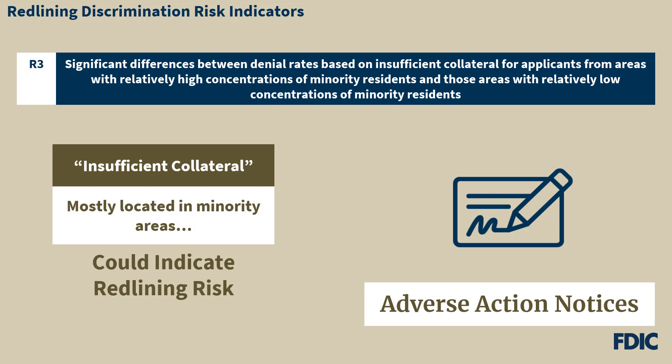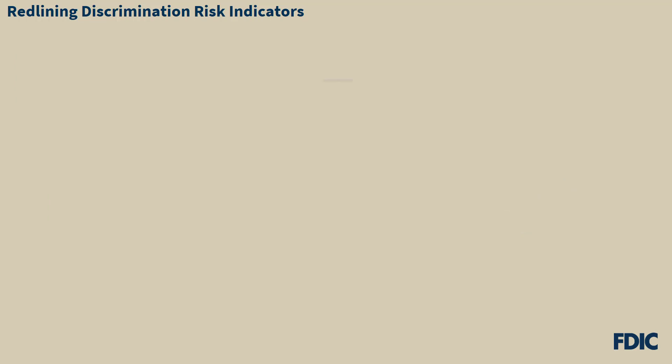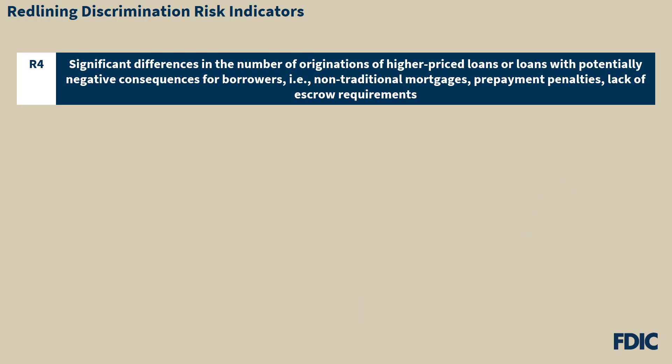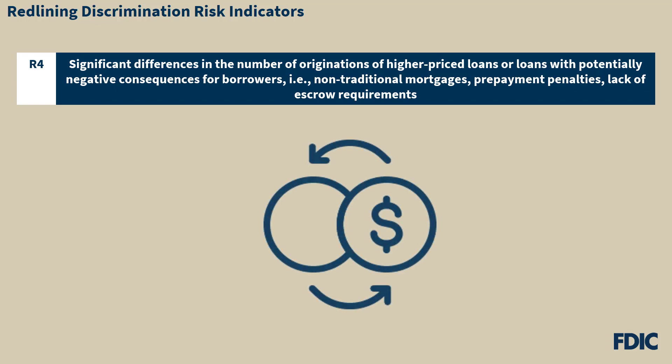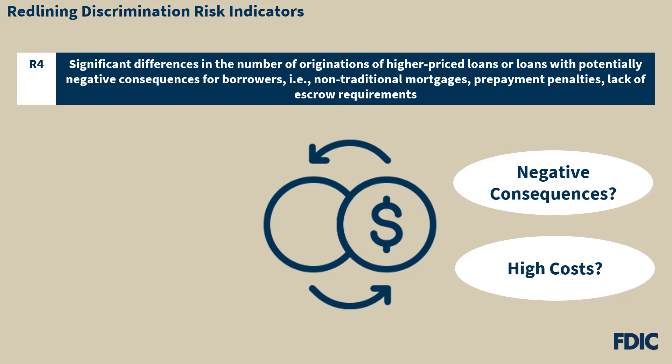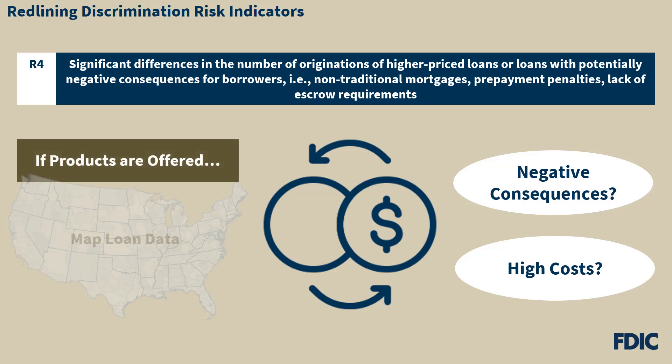This could reflect a different standard in how collateral is being evaluated in minority areas as compared to non-minority areas. Next, R4 addresses significant differences in the number of originations of higher-priced loans or loans with potentially negative consequences for borrowers — i.e., nontraditional mortgages, prepayment penalties, or lack of escrow requirements. HMDA data or other loan data would be used to plot such loans on a map to assess whether such products are offered more in areas with relatively high concentrations of minority residents as compared to areas with relatively low concentrations of minority residents.